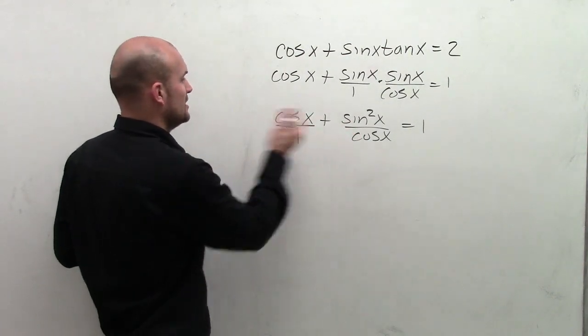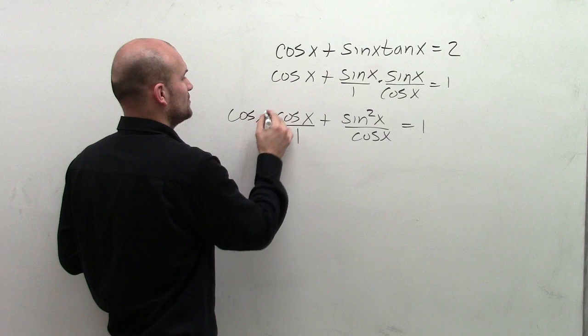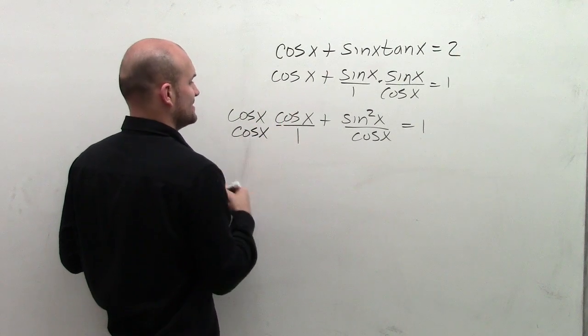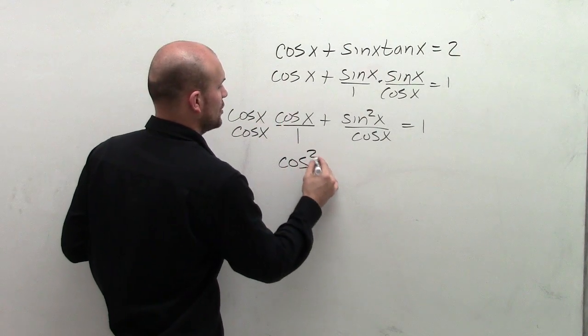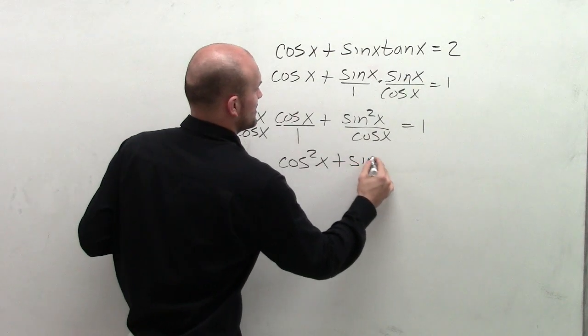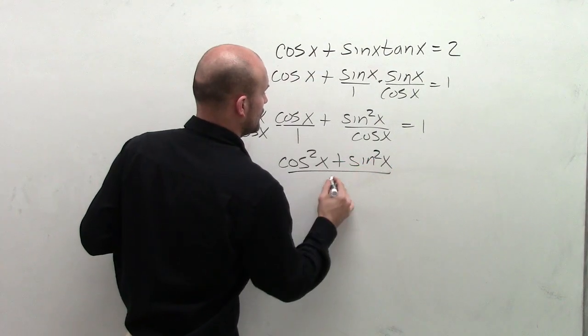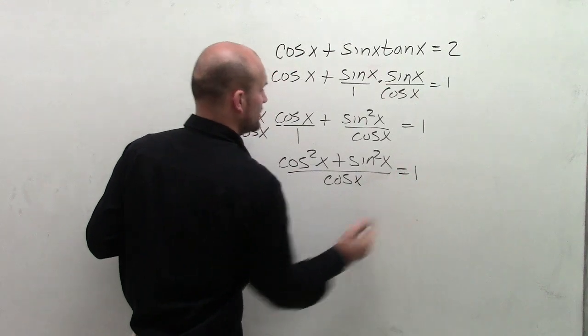So if I put this over 1, to combine my two terms, I'm going to have to multiply the cosine of x on the top and the bottom, leaving me with cosine squared of x plus sine squared of x all over cosine of x equals 1.